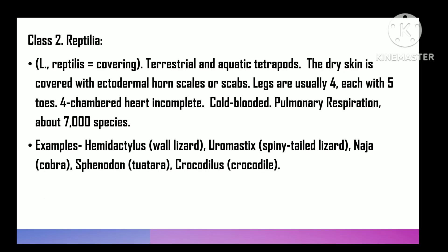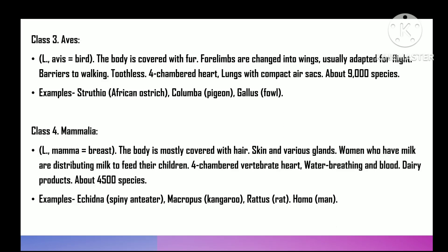Class 2 is Reptilia — 'reptile' means creeping — terrestrial and aquatic tetrapods. Skin dry, covered by ectodermal horny scales or scutes, limbs typically four each with five clawed toes, skeleton bony, heart incompletely four-chambered, cold-blooded, respiration by lungs. Approximately 7000 species. For example, Hemidactylus (wall lizard).